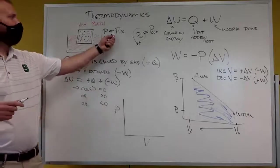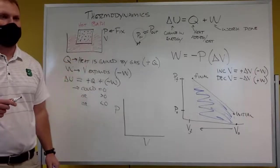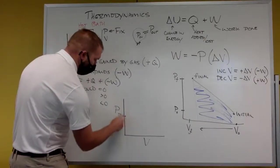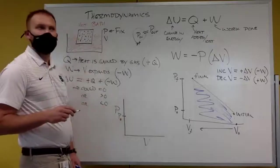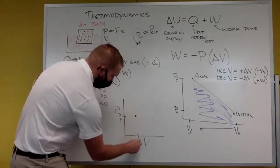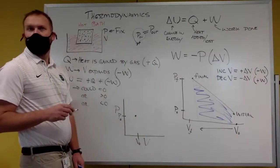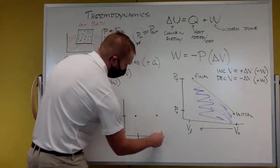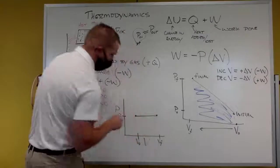What's my pressure versus volume graph look like? We keep pressure constant. I have some pressure P initial, I start at some volume initial, and then it expands — so the graph goes horizontally to volume final.